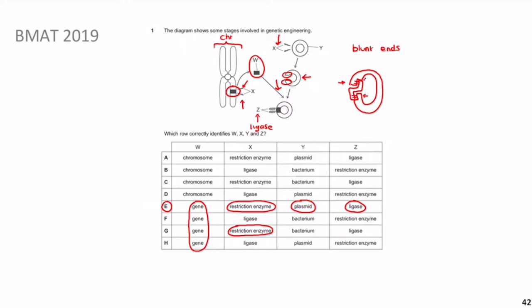Even with sticky ends, there's still a gap — the sugar phosphate backbone hasn't fully sealed. That's where DNA ligase comes in: it completes the seal. So the full process is: use restriction enzymes to extract the gene creating sticky ends, do the same to the plasmid, join the two via hydrogen bonds at complementary base pairs, then use DNA ligase to complete the sugar phosphate backbone.